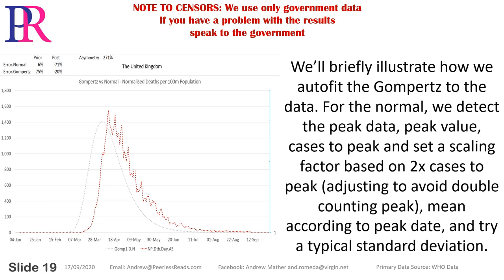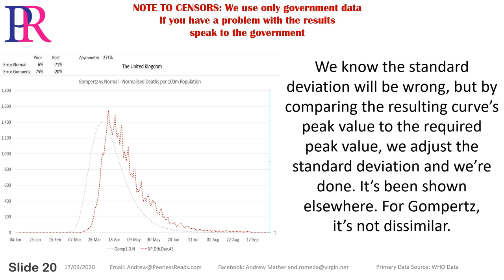We'll briefly illustrate how we autofit the curves to the data. For the normal, we detect the peak data value, cases to peak, and set a scaling factor based on 2 times cases to peak, adjusting to avoid double counting peak. We set the mean according to the peak date and try a typical standard deviation. We know the standard deviation will be wrong, but by comparing the resulting curve's peak value to the required peak value we adjust the standard deviation and we're done.